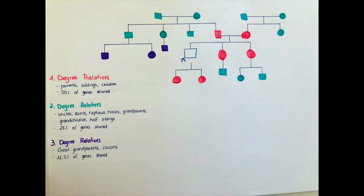Following back a family tree hundreds and hundreds of years makes genetically speaking very little sense, because already after a few decades, most of the genes in a general population will be contained in the gene pool.